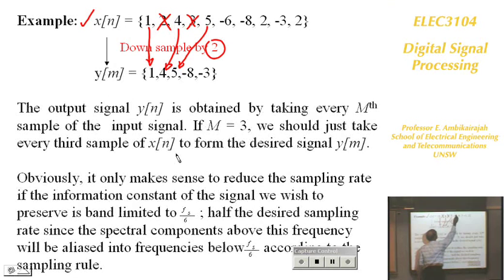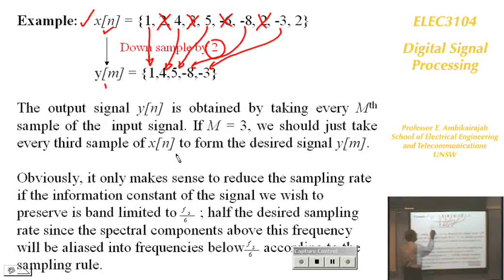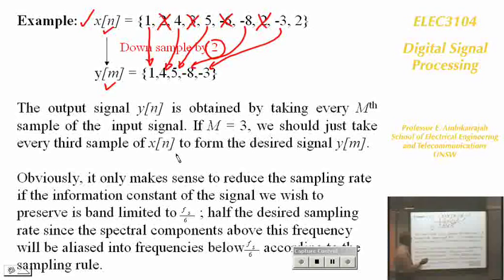You remove alternating samples and retain every other one to form the new sequence indexed by M at a different sampling rate. The number of samples in the input is double that in the downsampled output. If M is 3, you simply take every third sample.